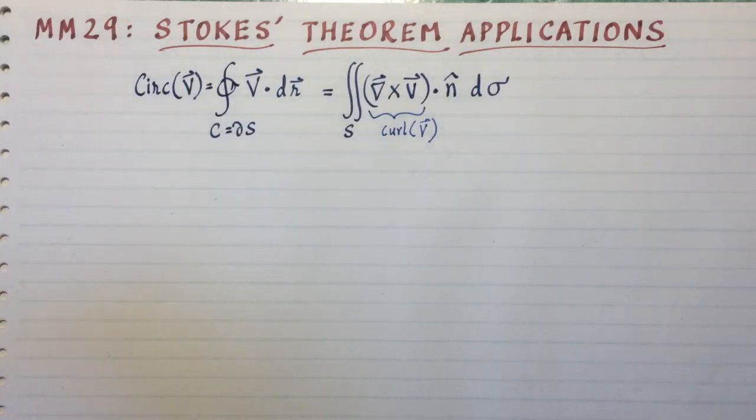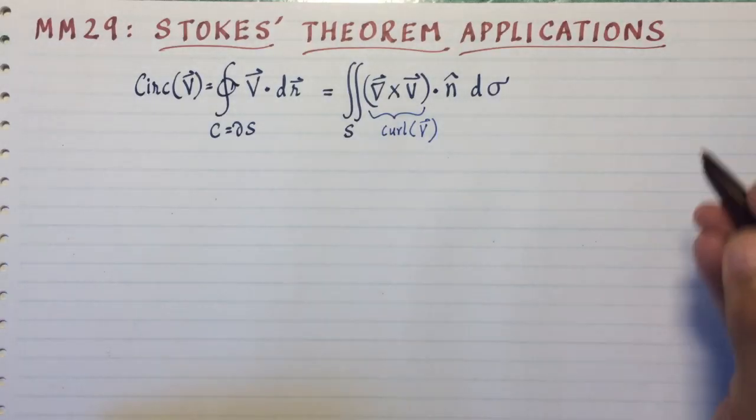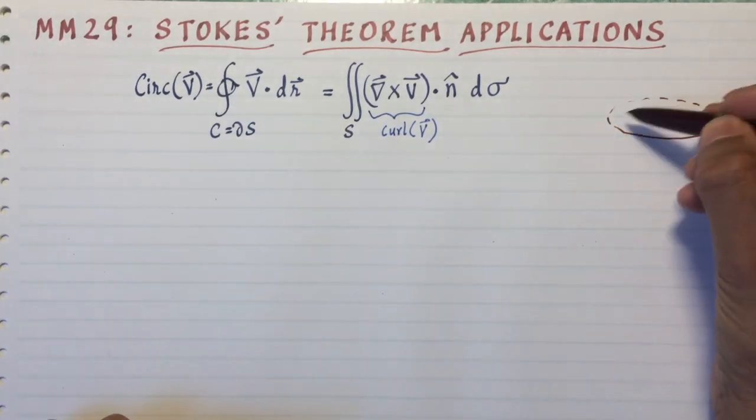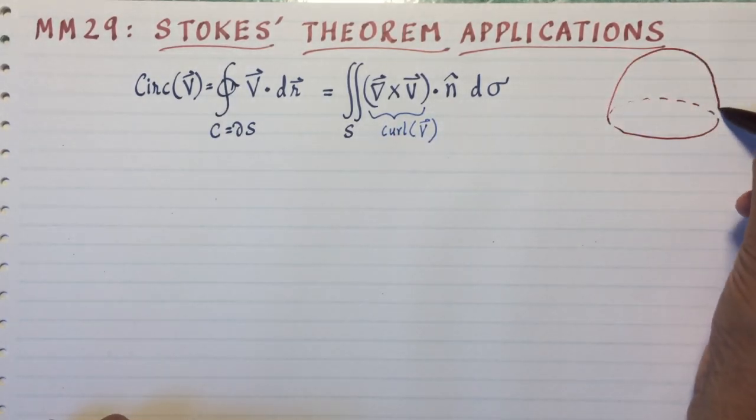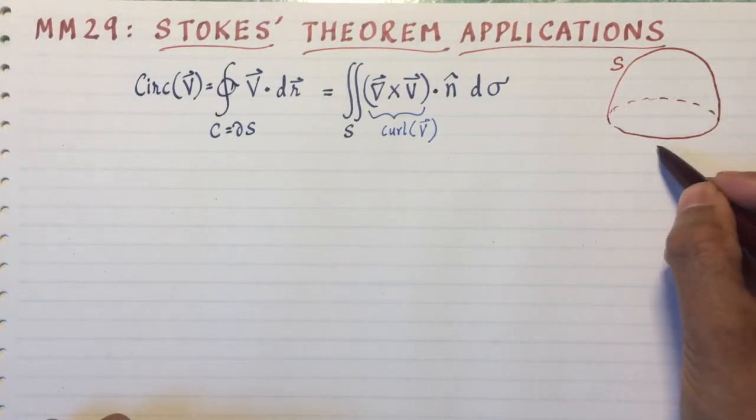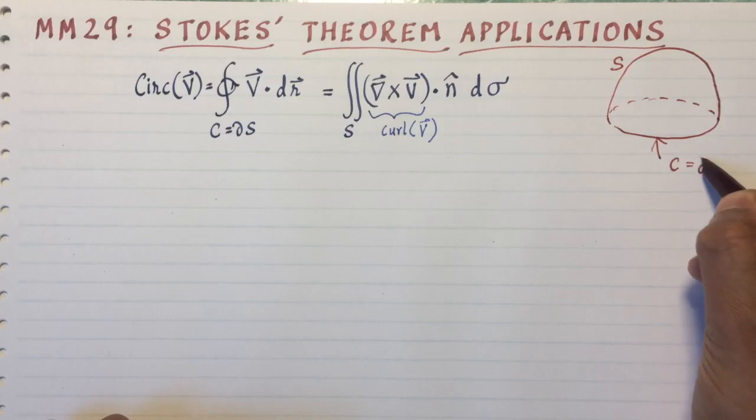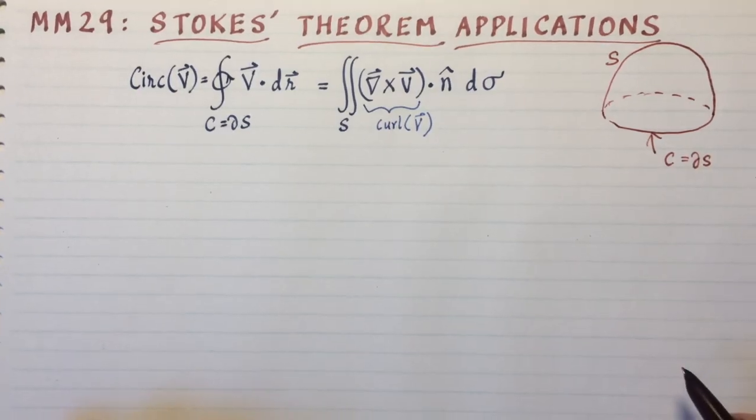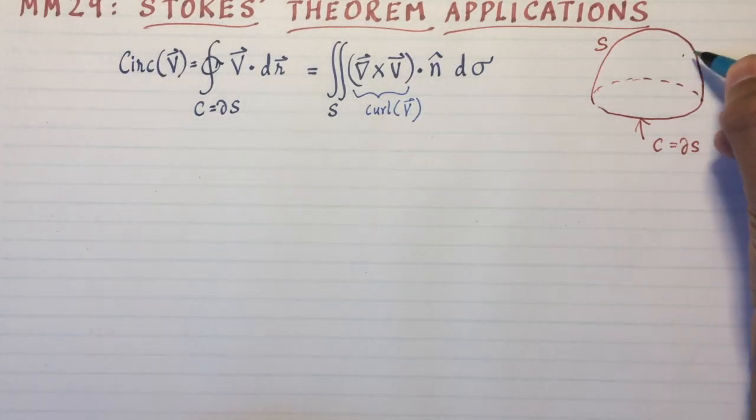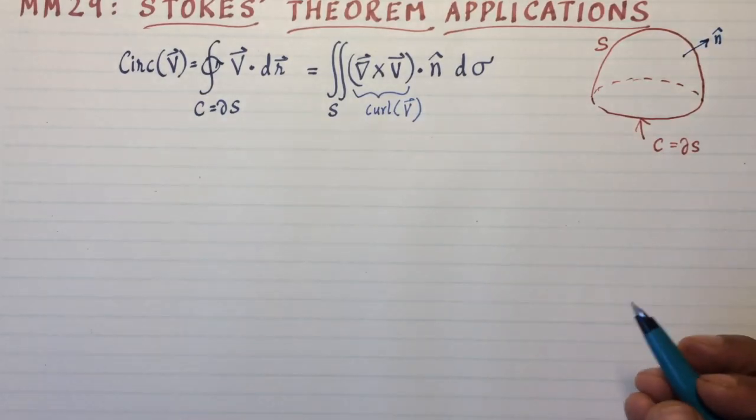So it might be a good idea to draw a little picture to identify all these ingredients. So here's a surface S, and the boundary of that surface is this curve C. There is a normal vector to the surface at every point. And if you take the unit outward normal convention, that would be the normal vector.